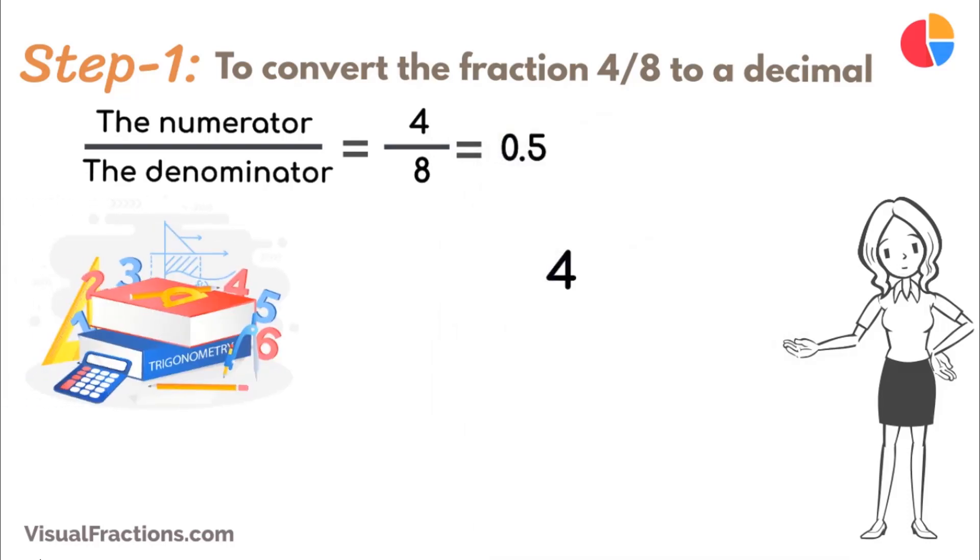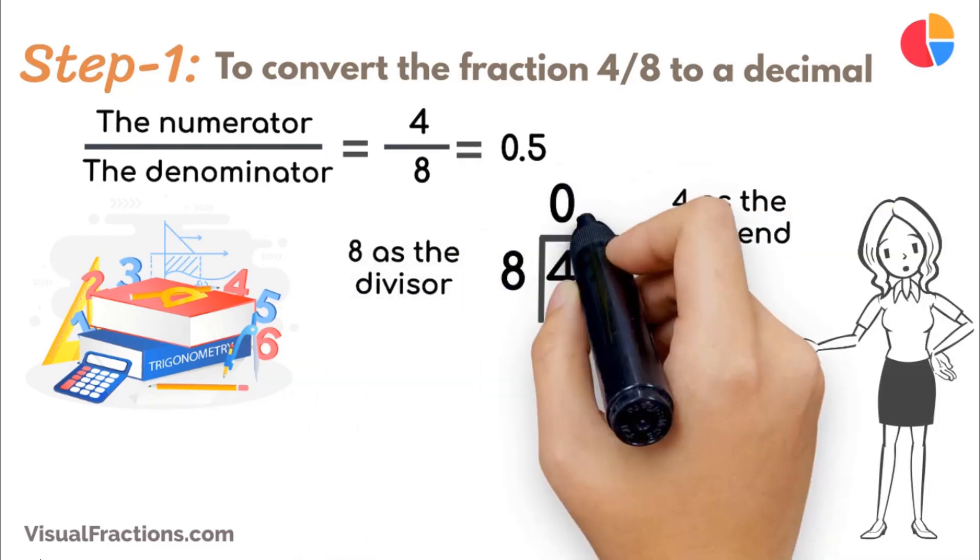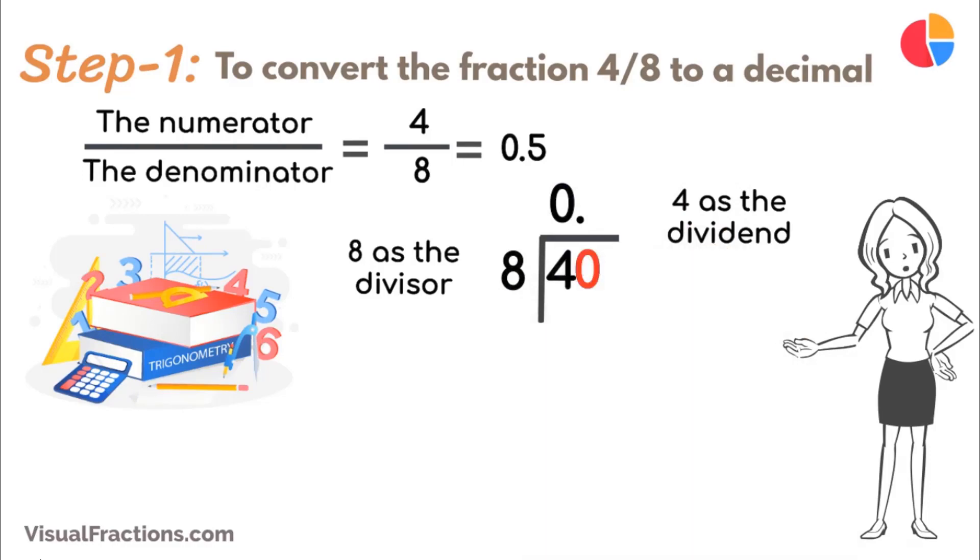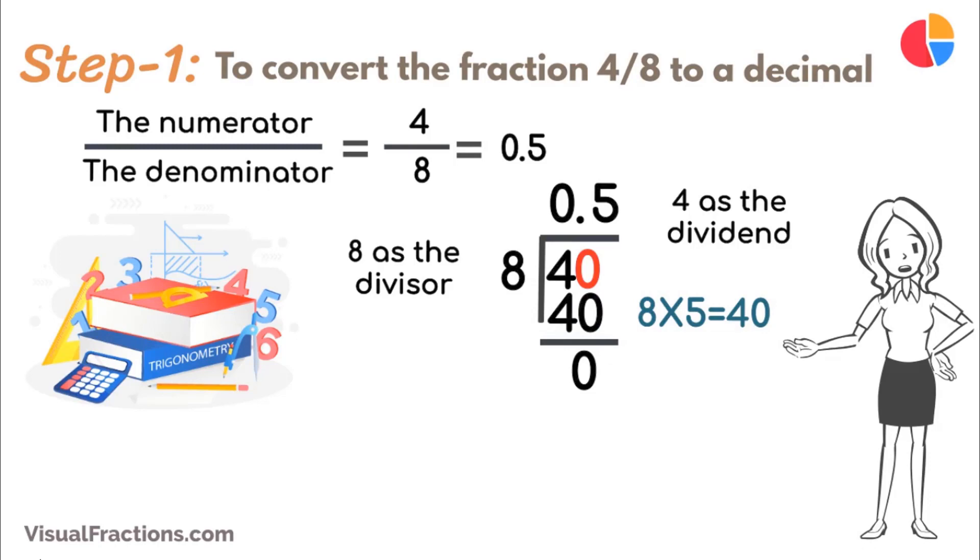Place 4 as the dividend and 8 as the divisor. Since 8 doesn't fit into 4, place a decimal point in our quotient and bring down a 0, making it 40. 8 goes into 4 5 times, putting 0.5 in our quotient. Multiply 8 by 5 to get 40, and subtract this from 40, leaving a remainder of 0.